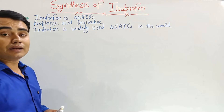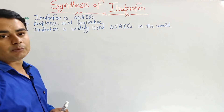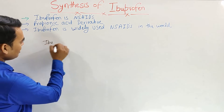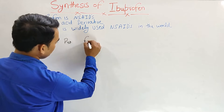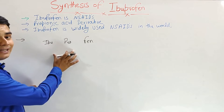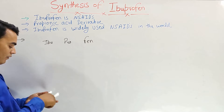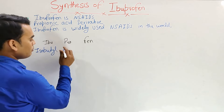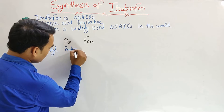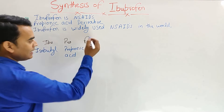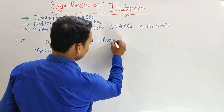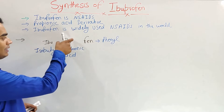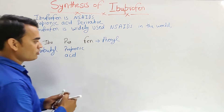First, let's look at the structure of ibuprofen and how its name is determined. Ibuprofen has three name components: 'ibu' comes from isobutyl, 'profen' from propionic acid, and 'phen' from phenyl. So: isobutyl + propionic acid + phenyl = ibuprofen.